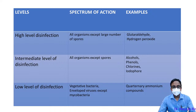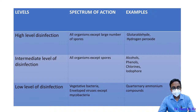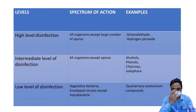The spectrum of organisms killed: high-level disinfectants kill most organisms except large numbers of spores; intermediate level kills most organisms except spores; and low level kills mostly vegetative bacteria, enveloped viruses, except Mycobacterium.